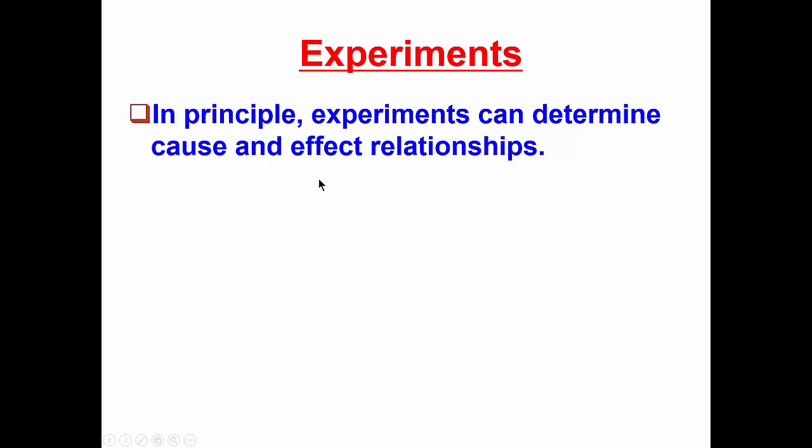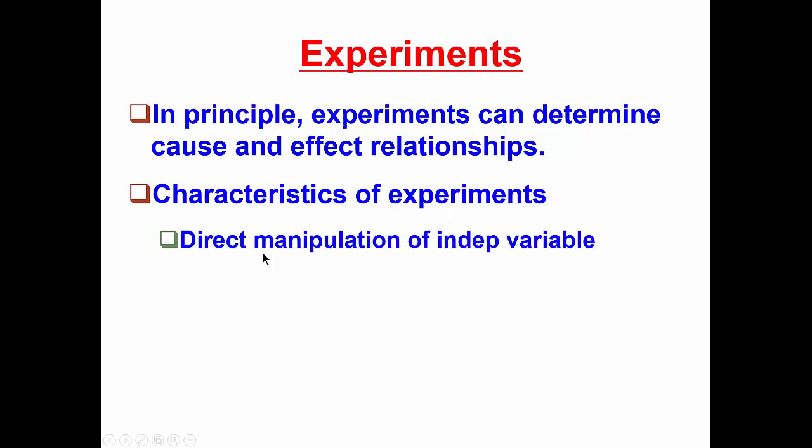So we can ask about the characteristics that experiments possess that allow them to draw cause-and-effect inferences. Here are some characteristics. We'll start out with three of them that typify experiments. First, we typically have a directly manipulated independent variable, and this is something we don't often see in observational studies.